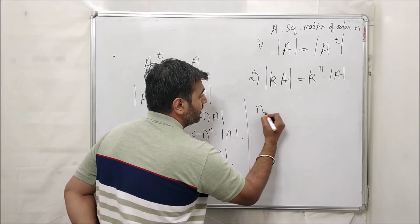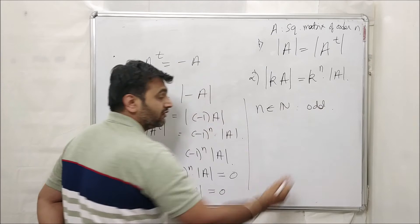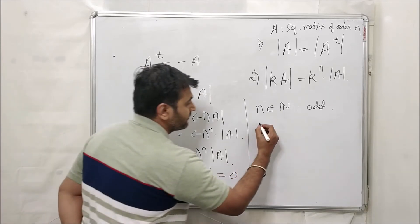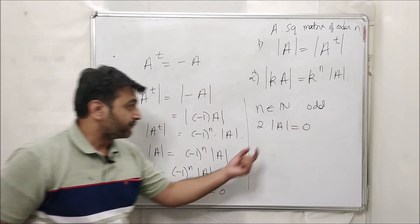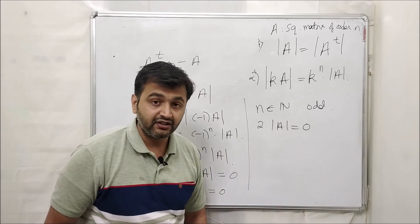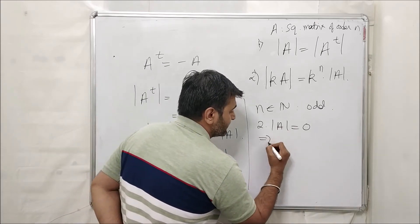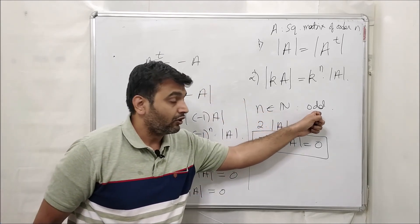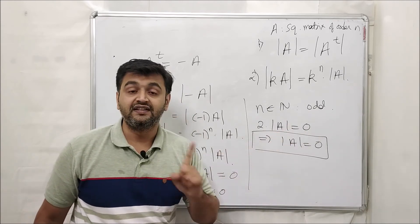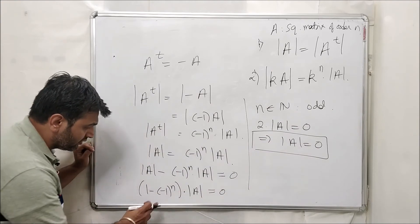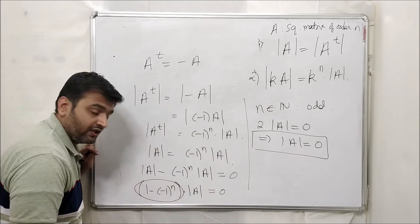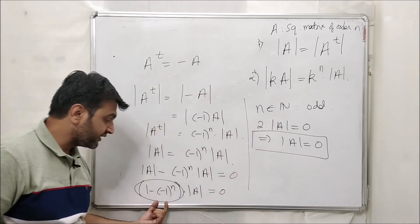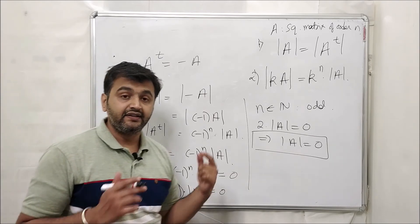Now suppose n is odd. Then (−1)ⁿ = −1, so the bracket becomes 1 − (−1) = 2. We get 2 · det(A) = 0. Since 2 is non-zero, this implies det(A) = 0. So whenever you have a skew-symmetric matrix of odd order, its determinant is always zero. If n is even, then (−1)ⁿ = 1, so the bracket becomes 1 − 1 = 0, and we cannot conclude anything. When n is odd, the bracket is non-zero, so det(A) must be zero.